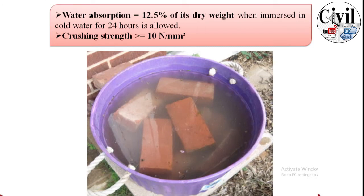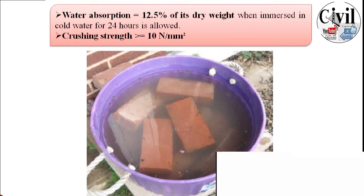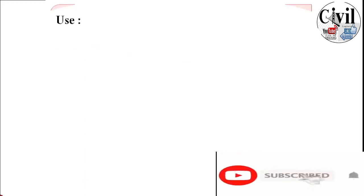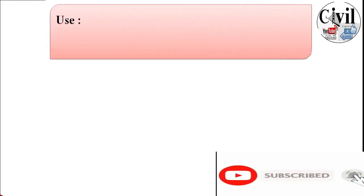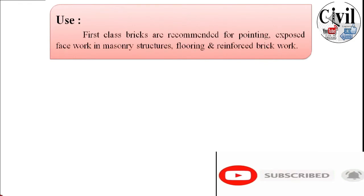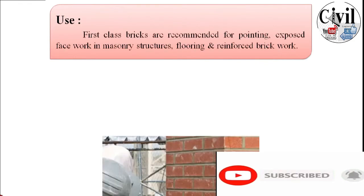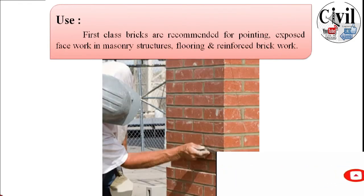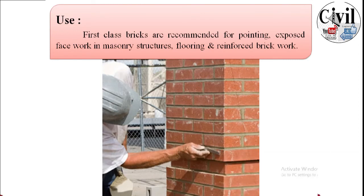The crushing strength of a good quality brick should not be less than 10 newton per millimeter square — this is the minimum strength. First class bricks are recommended for pointing, exposed face work in masonry structures, floorings, and reinforced brick works.